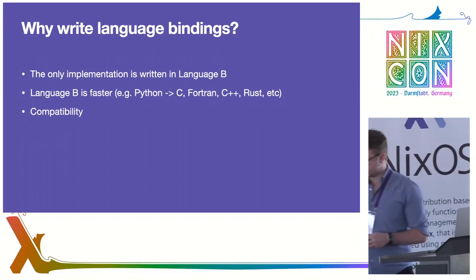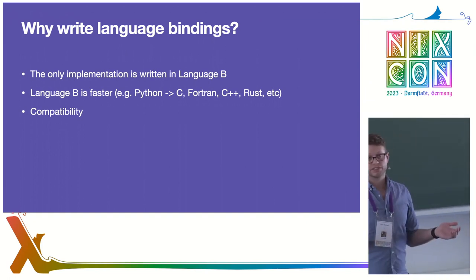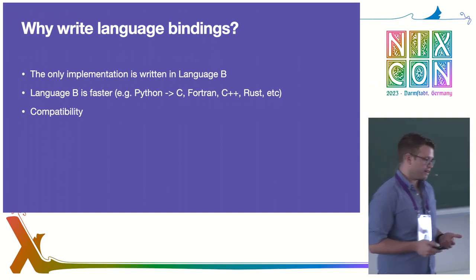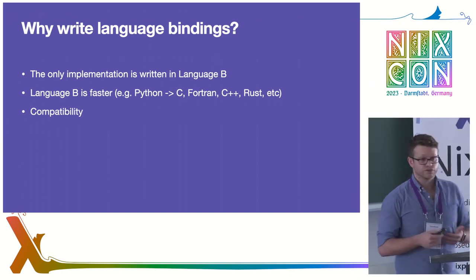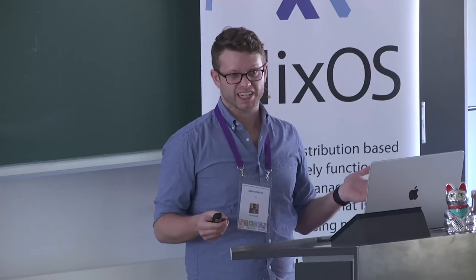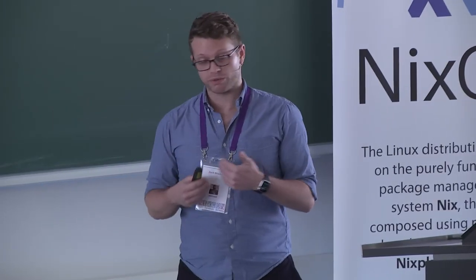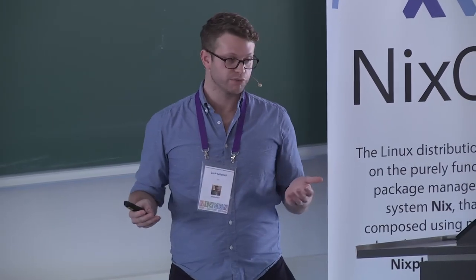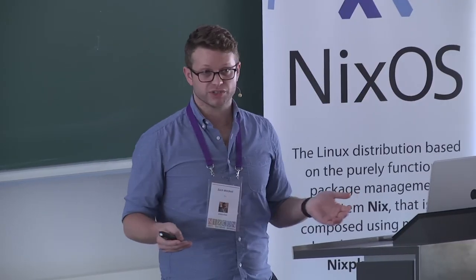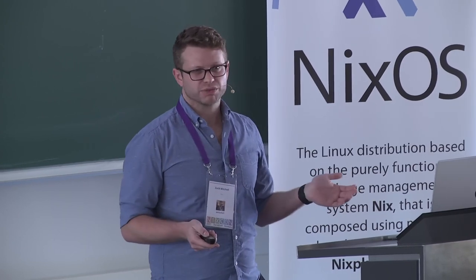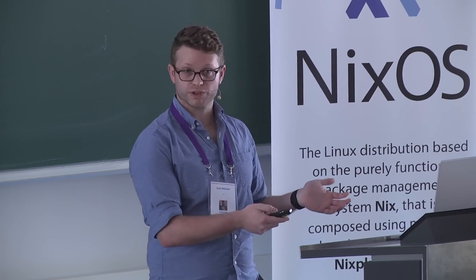The next reason is compatibility. Let's say you want to parse a flake reference. At Phlox, we had our own implementation written in Rust. Regardless of which was more correct — it was probably Nix, let's be real — there are going to be some differences between how your Rust implementation does it and how Nix does it. By virtue of those differences, you have bugs for your users. So you probably just want to be compatible with the rest of the ecosystem — language bindings.